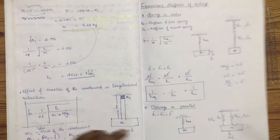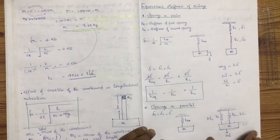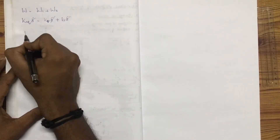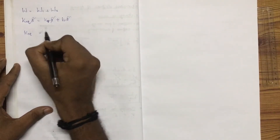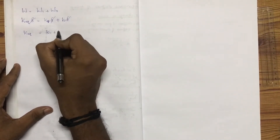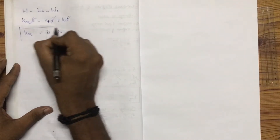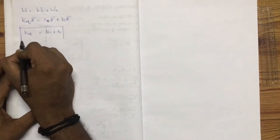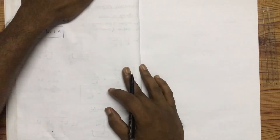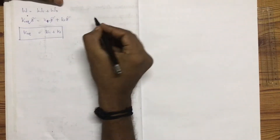So the total equation is K equals K1 plus K2. This is the equivalent stiffness for springs in parallel.